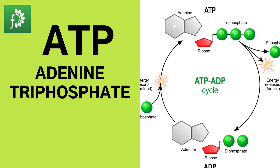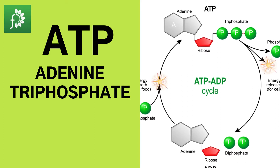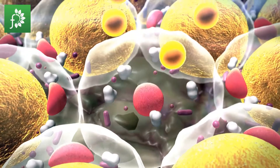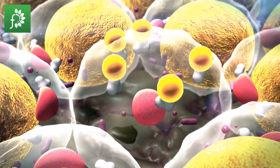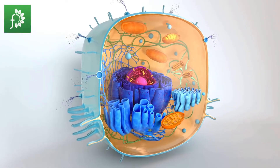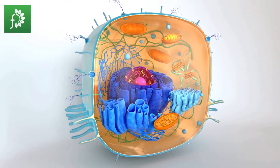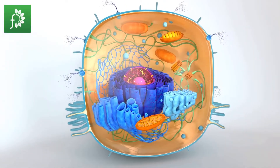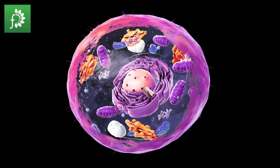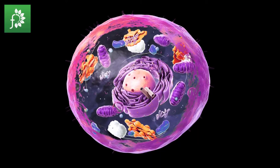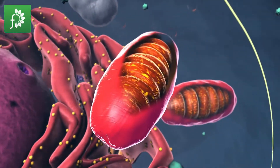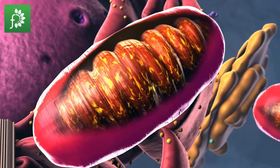ATP is released by the mitochondria, so cells can use it. Mitochondria consist of two membranes: an outer membrane, separating it from the cytosol, and an inner membrane, surrounding the so-called matrix. The area between these membranes is called the intermembrane space.